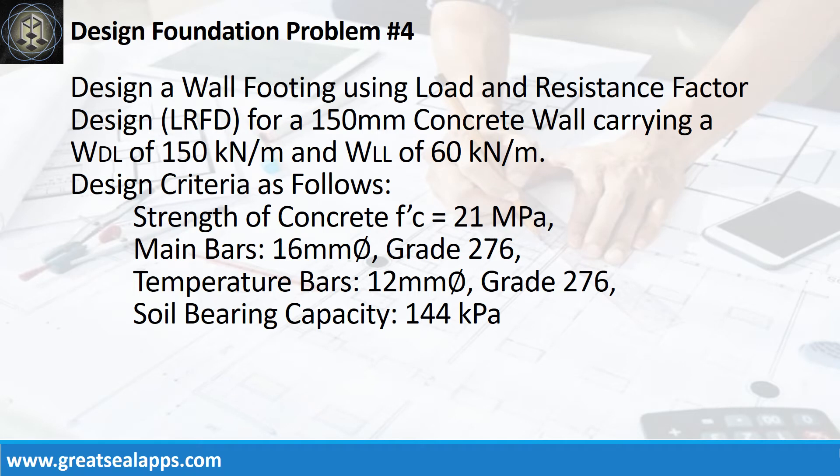Design a wall footing using load and resistance factor design for a 150mm concrete wall carrying a uniform dead load of 150kN per meter and uniform live load of 60kN per meter. Design criteria as follows: Strength of concrete, 21MPa. Main bars, 16mm bar, grade 276. Temperature bars, 12mm bar, grade 276. Soil bearing capacity, 144kPa.